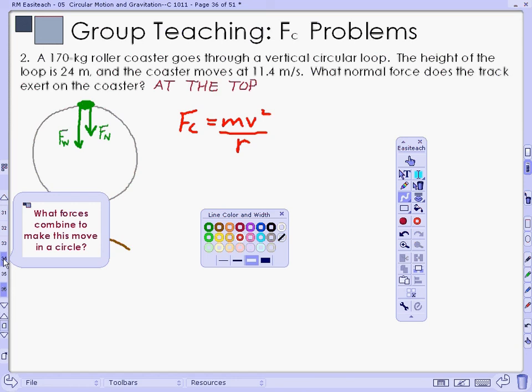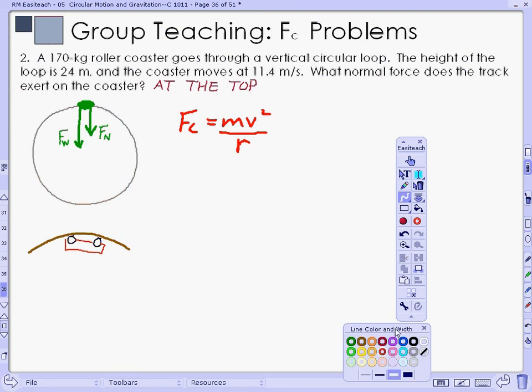In the previous example there's only one force. In this example there are several forces—there are two forces. So I write force weight plus force normal equals mv²/r.